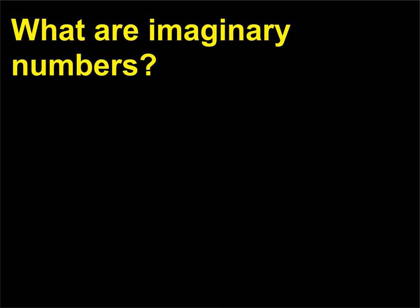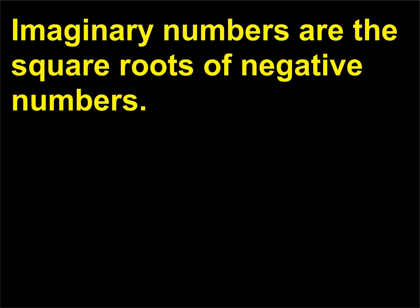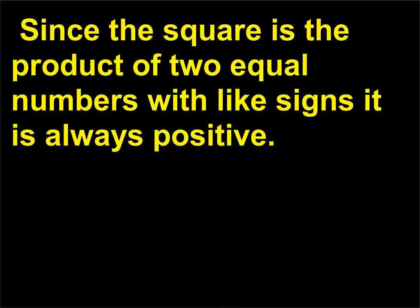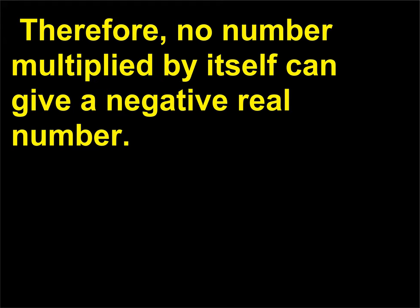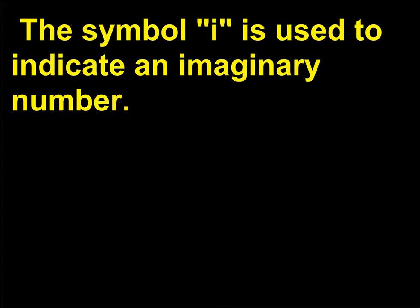What are imaginary numbers? Imaginary numbers are the square roots of negative numbers. Since the square is the product of two equal numbers with like signs, it is always positive. Therefore, no number multiplied by itself can give a negative real number. The symbol i is used to indicate an imaginary number.